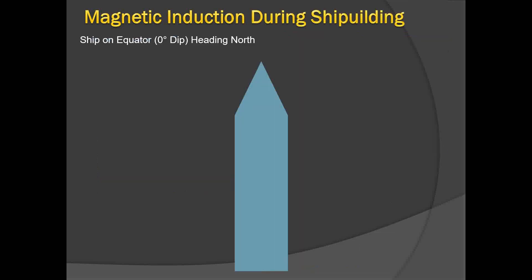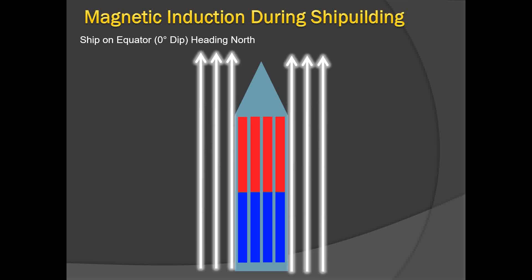Lines of force conventionally come out of the red (north) pole and enter the blue (south) pole, similar to a bar magnet. The ship also becomes similar to a magnetic bar in this way. The question then is: which is the blue pole and which is the red pole of the vessel? For this we have to look at the direction the vessel was lying in when and where she was built. The north pole of a magnetic bar is denoted by the red colour and the south pole by the blue colour.